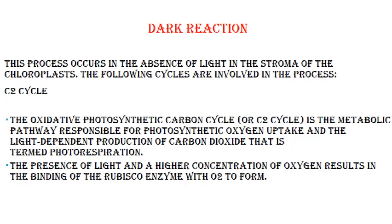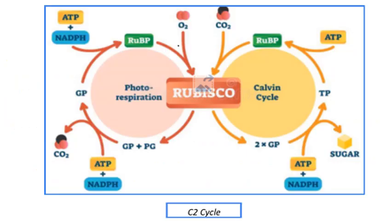Next is the dark reaction. This process occurs in the absence of light in the stroma of the chloroplast. The following cycles are involved in the process. The oxidative photosynthetic carbon cycle, or C2 cycle, is the metabolic pathway responsible for photosynthetic oxygen uptake and the light-dependent production of carbon dioxide, termed photorespiration. The presence of light and higher concentration of oxygen results in the binding of the rubisco enzyme with oxygen. This is the flow chart of the C2 cycle, showing photorespiration and the rubisco enzyme working.